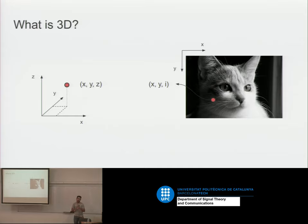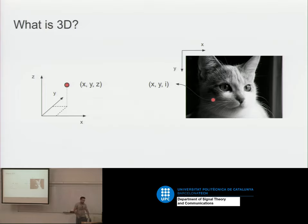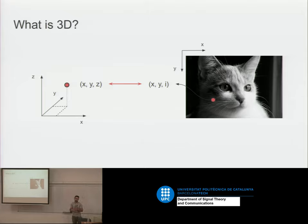That's the difference between domain and signal. In a depth image, the domain is 2D and the signal flowing on top is 1D. In a volumetric representation, the domain is 3D and we can have an n-dimensional signal. In 3D, the representation matters a lot. The first thing you need to understand when approaching a 3D problem is to think about which data representation fits better for your problem — otherwise you will struggle a lot.